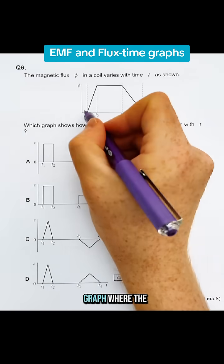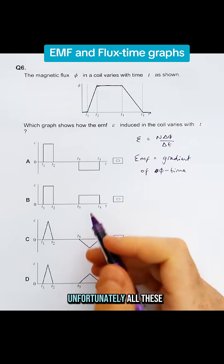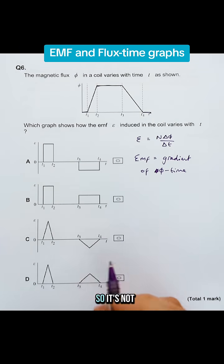So the only times on the graph where there's zero gradient would be here, here and sort of down at the end. Now unfortunately all these graphs follow that pattern so that's not massively helpful.